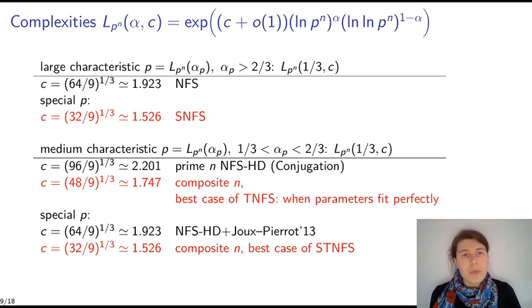So this leads to these complexities. So the number field sieve and all of its variants have a sub-exponential complexity with the formula given above, like it's the exponential of a constant C times log of P to the n to the power alpha, log of log of P to the n to the power 1 minus alpha. For large characteristic P, that is a prime field, for example, or a very small exponent and very, very large P, then we have that the complexity, with alpha equals one third and the constant C, is approximately 1.9.